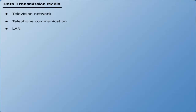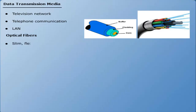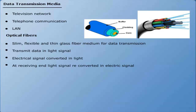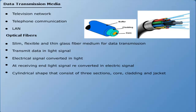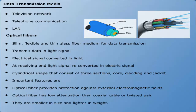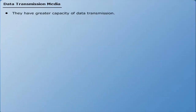An optical fiber is a slim, flexible, and thin glass fiber medium for data transmission. It transmits data in the form of light signals. Electrical signals are converted to light, and at the receiving end, light signals are reconverted into electrical signals. The shape of an optical fiber is like a cylinder with three sections: the core, cladding, and jacket. Features include: protection against external electromagnetic fields, low attenuation compared to coaxial cable or twisted pair, smaller size and lighter weight, and greater capacity for data transmission.